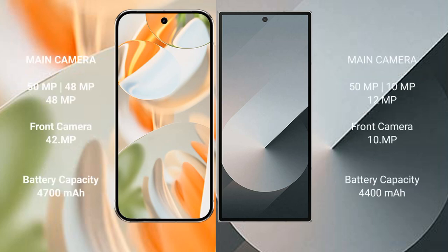Google Pixel 9 Pro features a triple rear camera setup: 50MP main plus 48MP plus 48MP, with a 42MP front camera. Samsung Galaxy Z Fold 6 also features a triple rear camera setup: 50MP main plus 12MP plus 10MP, with a 4MP front camera.